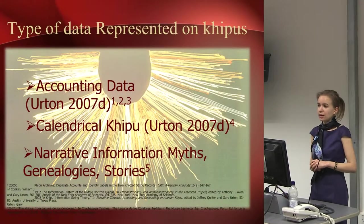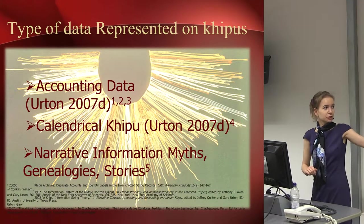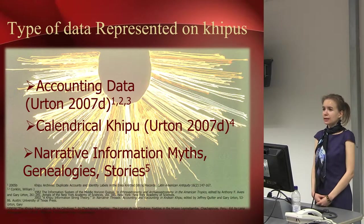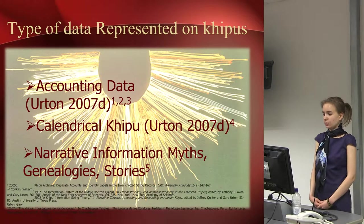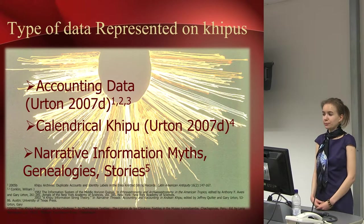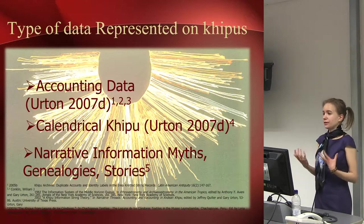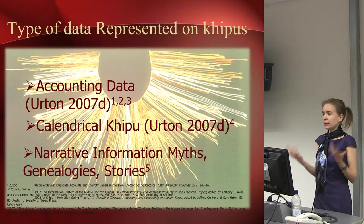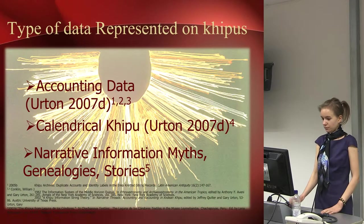The data recorded on those knots is the actual kipu. It's accounting data. A calendrical kipu was discovered approximately five years ago. In chronicles, you often see mentions of narratives, myths, religion, and genealogy of the Incas. However, we don't know how to read those types of kipus unfortunately, but hopefully one day.